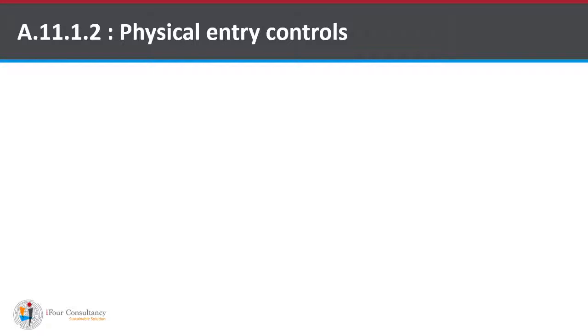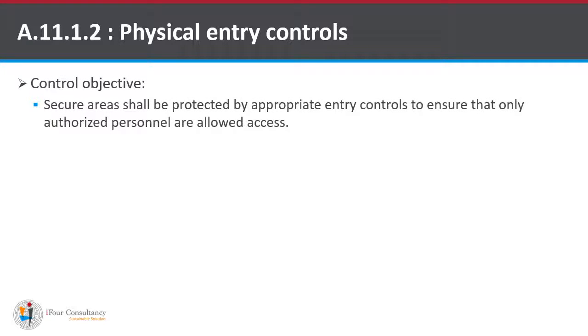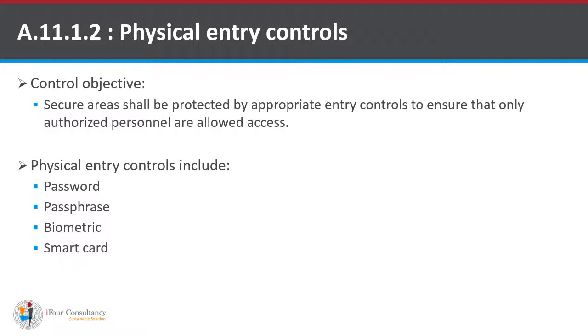The second sub-control is A.11.1.2, Physical Entry Controls. This control takes care of physical security at the entry point of any organization. The control objective is that secure areas shall be protected by appropriate entry controls to ensure that only authorized personnel are allowed access. Physical entry controls include Password, Passphrase, Biometric for two-factor authentication, and Smart Card. The combination of any two of these four controls provides the strongest security to the organization.